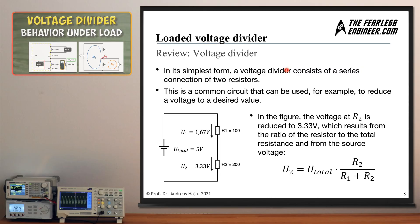Before we dive into the concept of the loaded voltage divider, let's quickly review the general voltage divider equation from the previous video. In its simplest form, a voltage divider consists of series-connected resistors, as shown in the schematic on the bottom left. We have a voltage source on the left and two resistors R1 and R2 on the right. The voltage drops are 1.67 volts for the upper resistor at 100 ohms, and 3.33 volts for the lower one at 200 ohms. Based on the ratio of resistors, you find the same ratio of division among the two voltages.